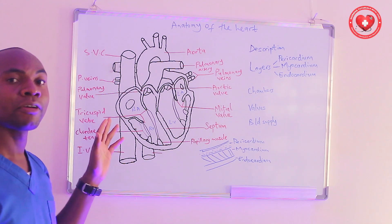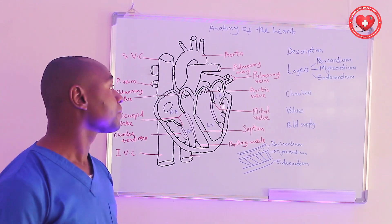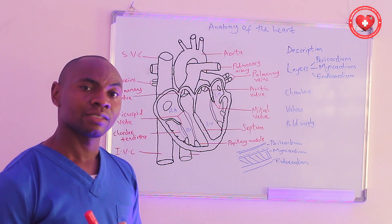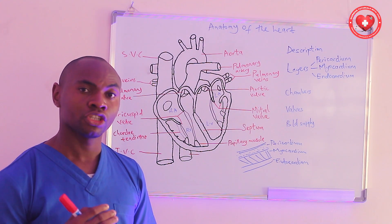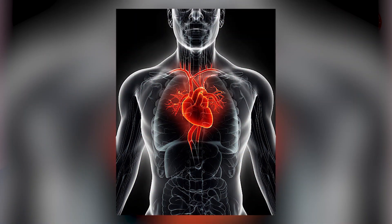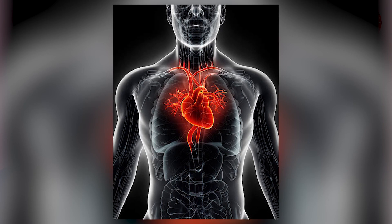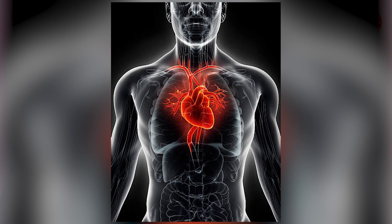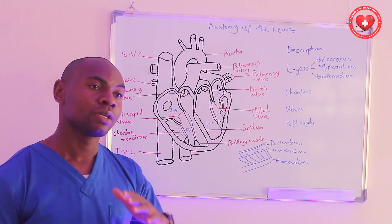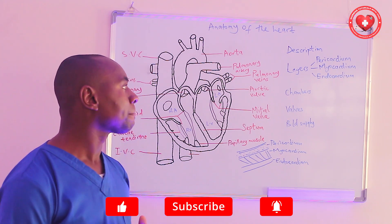This is a diagram of the anatomy of the heart with labels. Looking at the description of the heart, the first thing we need to understand is that it is a cone-shaped muscular organ located in the center of the thoracic region of the body, specifically at the mediastinum. It weighs approximately 300 grams, although it weighs differently in females than in males — it is heavier in males.